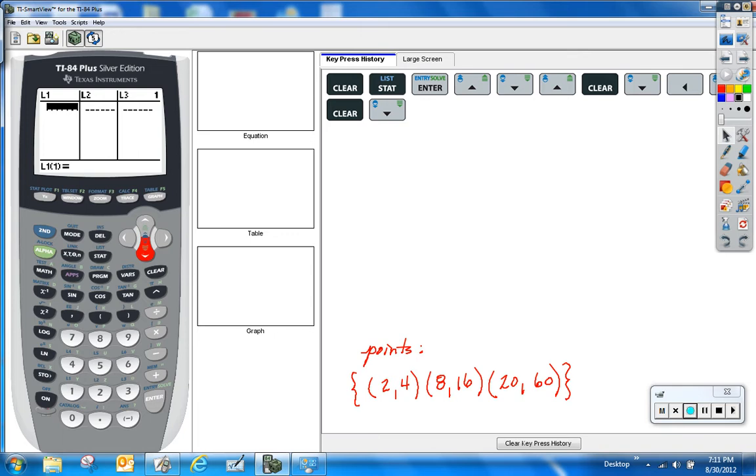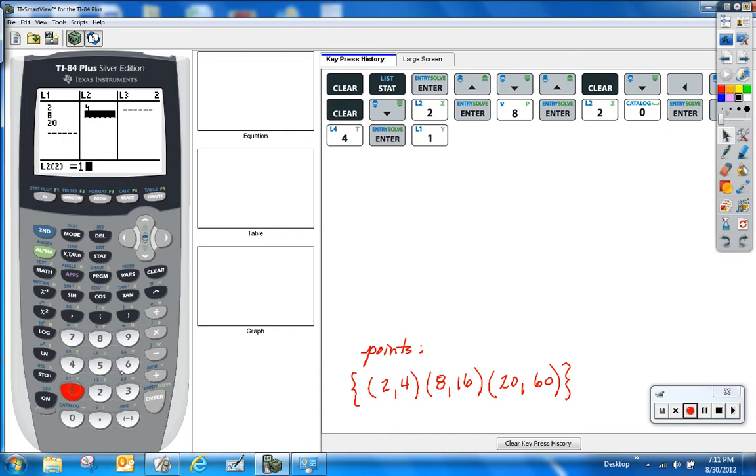Remember under L1 we need to store the X's so simply press 2 enter 8 enter 20 enter and I see that I've got the X coordinate stored under L1. I need to now enter the data for L2. That would be the Y coordinates. So I press 4 enter 16 enter and 60 enter. Now I have the data stored under the two lists. I'm ready to run the regression.